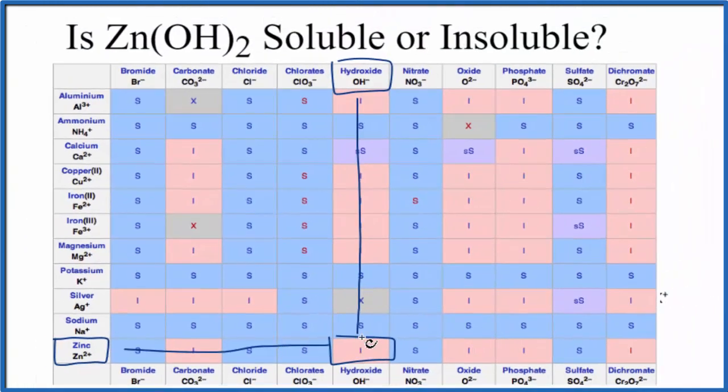There is one more way we could test this out. We could get some zinc hydroxide, put it in water, and see if any dissolved. We would expect that a little bit would dissolve. So in answer to our question, zinc hydroxide is slightly soluble in water. Just a little bit will dissolve.